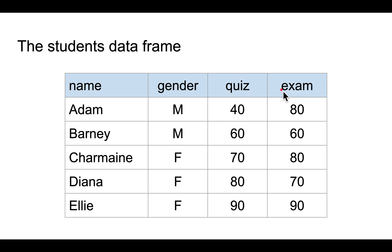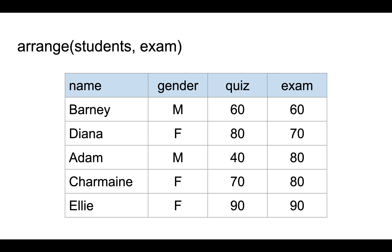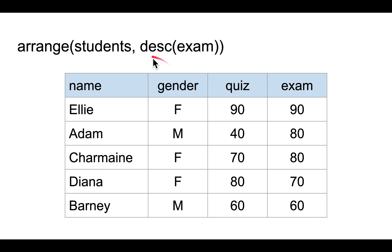The first function you learn is something called arrange. You arrange the name of the data frame and the column which you want to arrange by. By default, arrange sorts the rows in ascending order. Of course, you might want to sort the rows in descending order, in which case you use the DESC function.